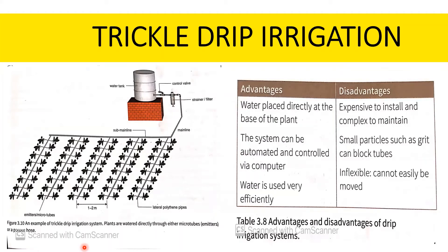The third type of irrigation is trickle drip irrigation. Trickle drip irrigation is a system of crop irrigation involving the controlled delivery of water directly to individual plants through a network of tubes or pipes, also known as drip irrigation. The advantages are: water is placed directly at the base of the plant; reduced water usage; maximum crop yield; water is used at maximum efficiency; soil infiltration capacity is increased; operational cost is low; and wastage of fertilizers is lessened.